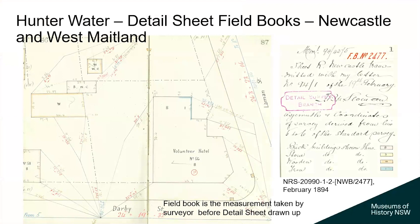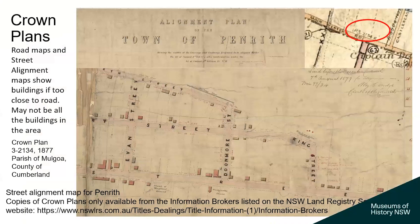Down here at the State Archives Reading Room we have the detailed sheet field books — the book the surveyor took out with them when they went to create the original record. As well as the outlines of buildings and what they're made of, you get all the measurements. Surveyors love these things because they're constantly rechecking. Another type of plan surveyors also love are the street alignments and road maps. These are crown plans. They've been digitised but are only available to purchase from the information brokers listed on the New South Wales Land Registry Services. You can't see them on the historic land record viewer — you can only come to Kingswood to the State Archives Reading Room to look at those.